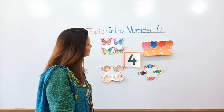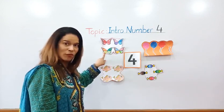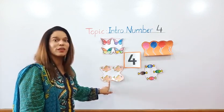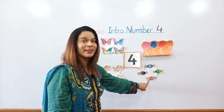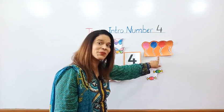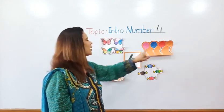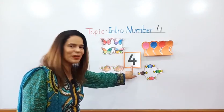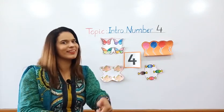Let's see. These are four butterflies, four fish, four candies, and four balloons. Very good. And where is number four? Here is number four. Well done.